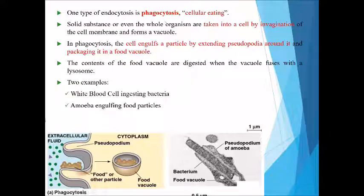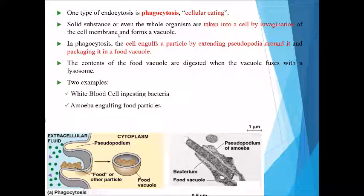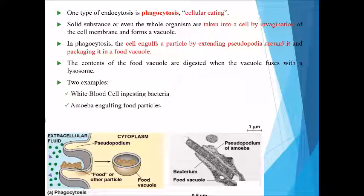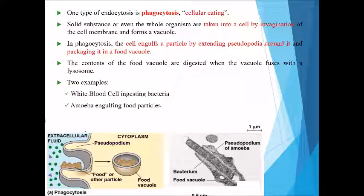Phagocytosis, also known as cellular eating, involves solid substances or even whole organisms being taken into the cell by invagination of the cell membrane to form a vacuole. The cell engulfs particles by extending pseudopodia around them and packaging them into food vacuoles. The contents of the food vacuole are digested when the vacuole fuses with a lysosome. Examples include white blood cells ingesting bacteria and an amoeba engulfing food particles.